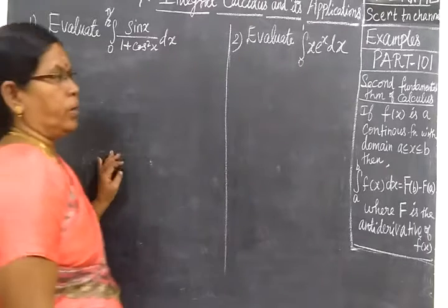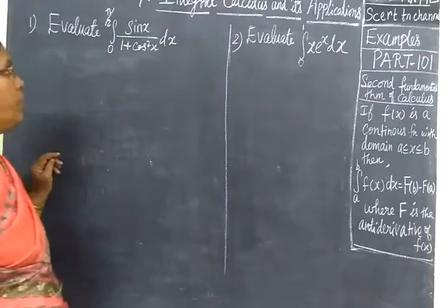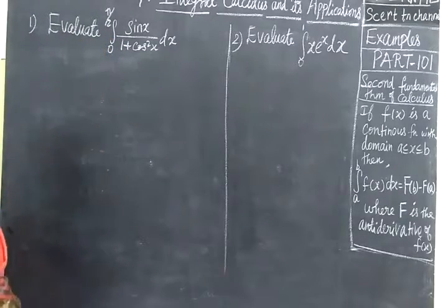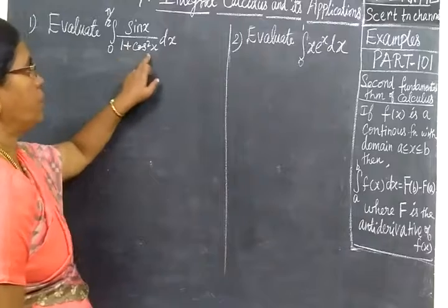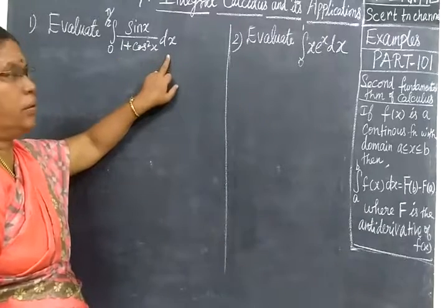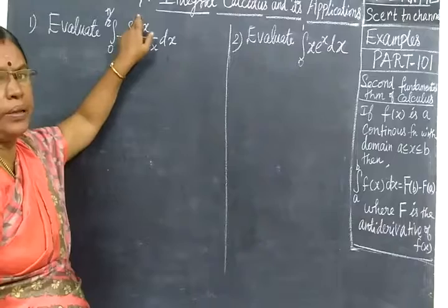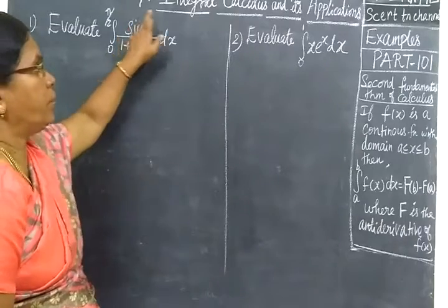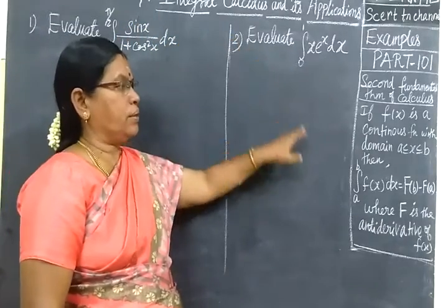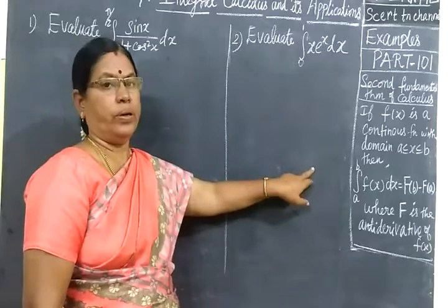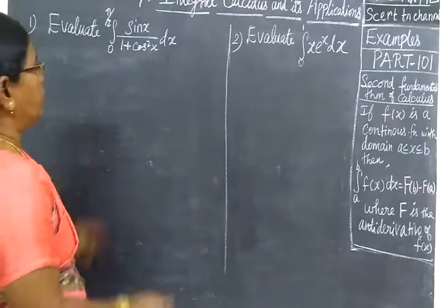Now we see Part 1 at Chapter 7 Exams. The integral from 0 to π/2 of sin x divided by (1 + cos x) dx. Last time we finished the 6th chapter exams; now we are seeing the 7th chapter — Integral Calculus.